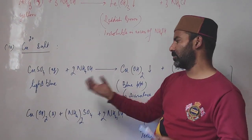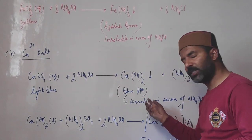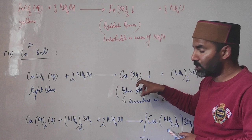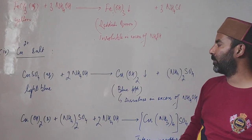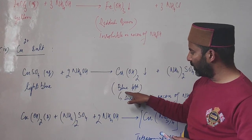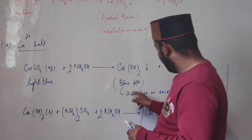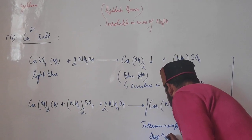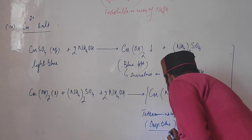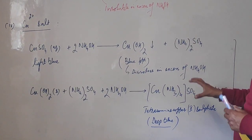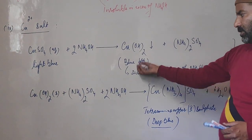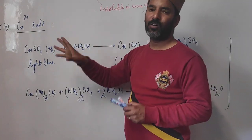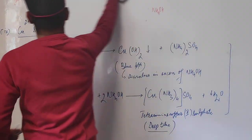So if a salt gives a blue precipitate upon adding ammonium hydroxide, and this blue precipitate dissolves when excess ammonium hydroxide is added, the salt contains copper ions Cu²⁺. Importantly, when excess alkali is added, a water-soluble complex salt forms with a deep inky-blue coloration. If a salt gives a blue precipitate that dissolves in excess alkali to give an inky-blue solution, the salt contains copper ions.